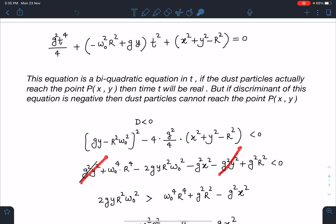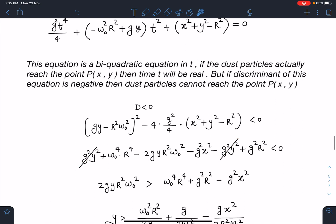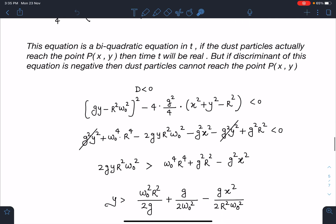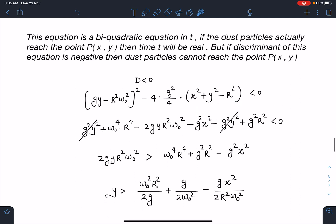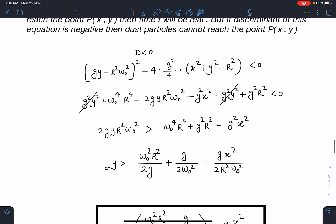Further, if I simplify, y² term is getting cancelled. So from here, y term you can take to the other side, and you will be getting y > (ω₀²R²)/(2g) + g/(2ω₀²) - (gx²)/(2R²ω₀²).